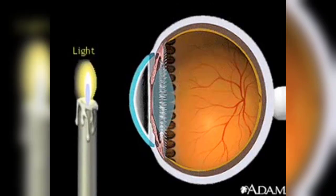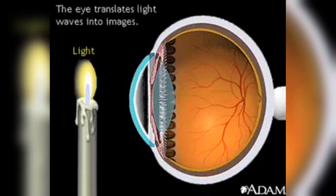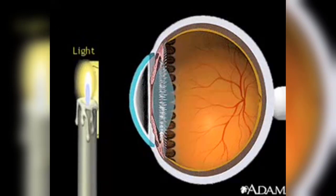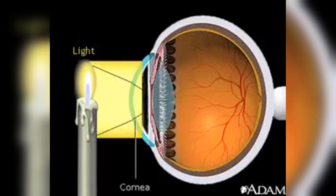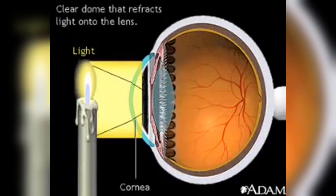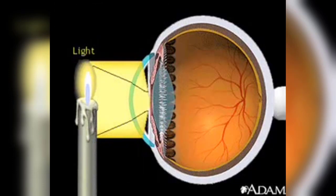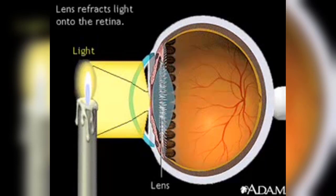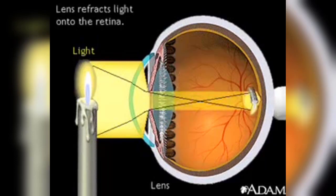Light from this candle can be used to show how the eye translates light waves into images. First, the candlelight passes through the cornea, a clear dome-like structure covering the iris or colored part of the eye. The cornea bends or refracts the candlelight onto the lens. The light is then refracted a second time while passing through the lens, finally focusing on the retina.